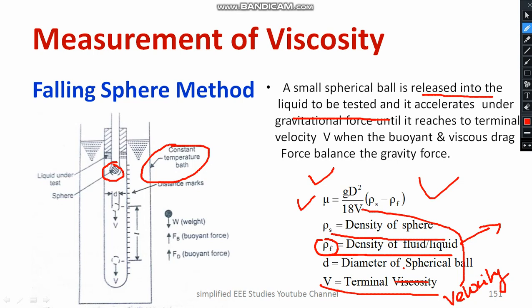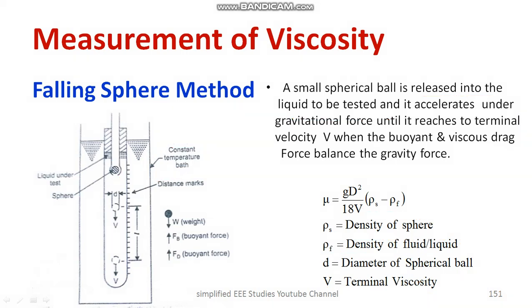You have to consider the density of the particular sphere and the fluid. Temperature has to be maintained constant. Remember the formula for computing the dynamic viscosity using the falling sphere method.